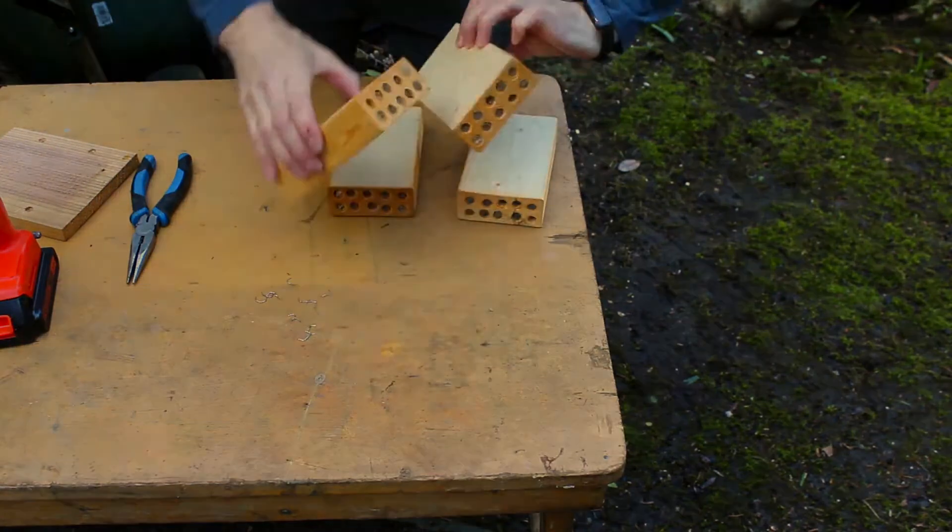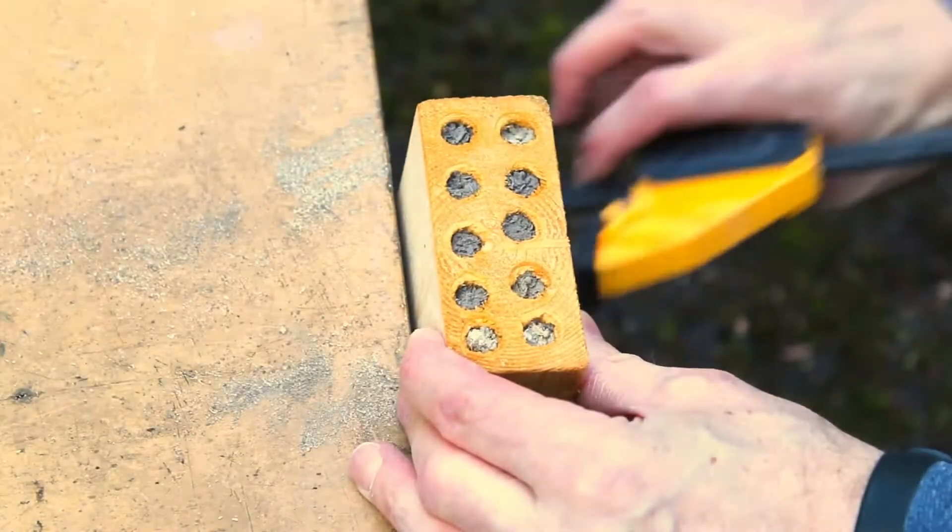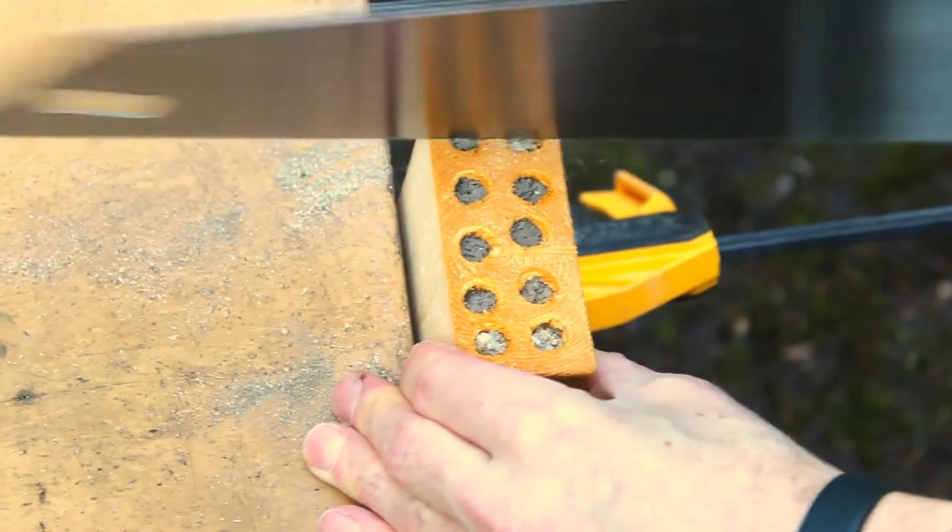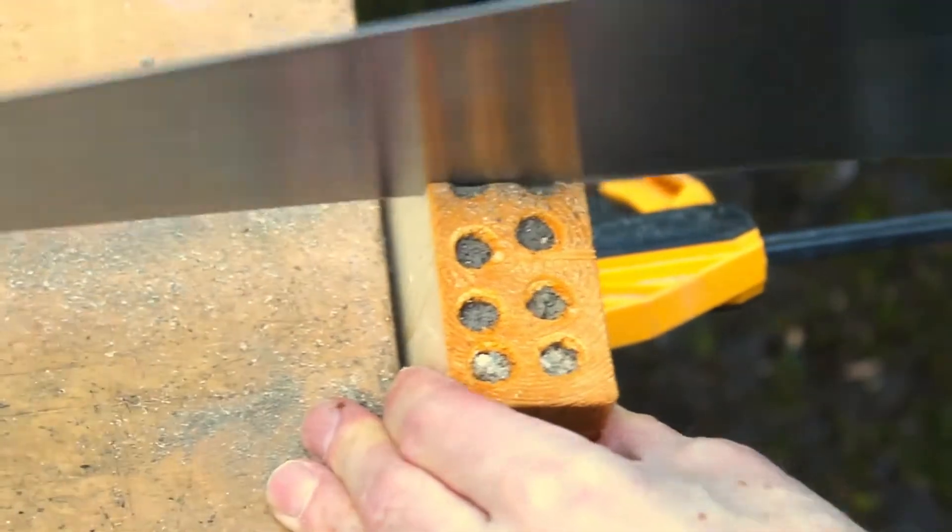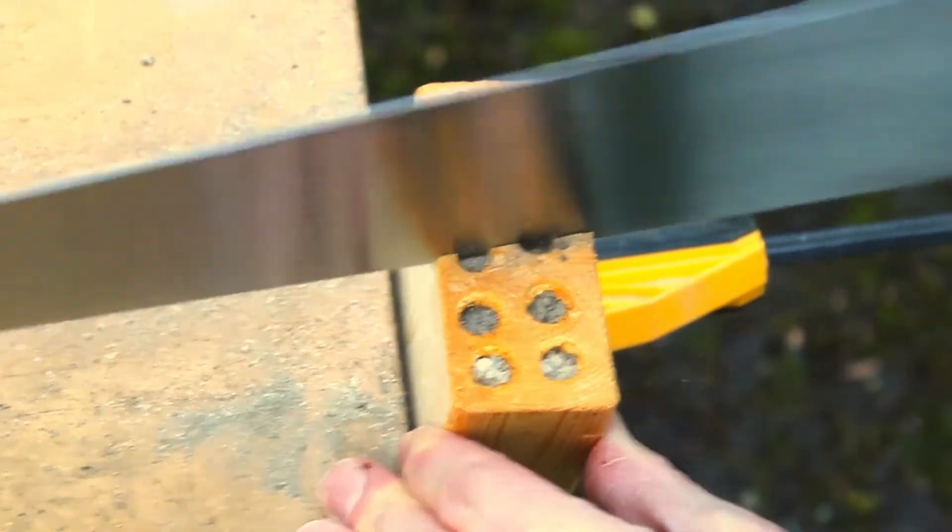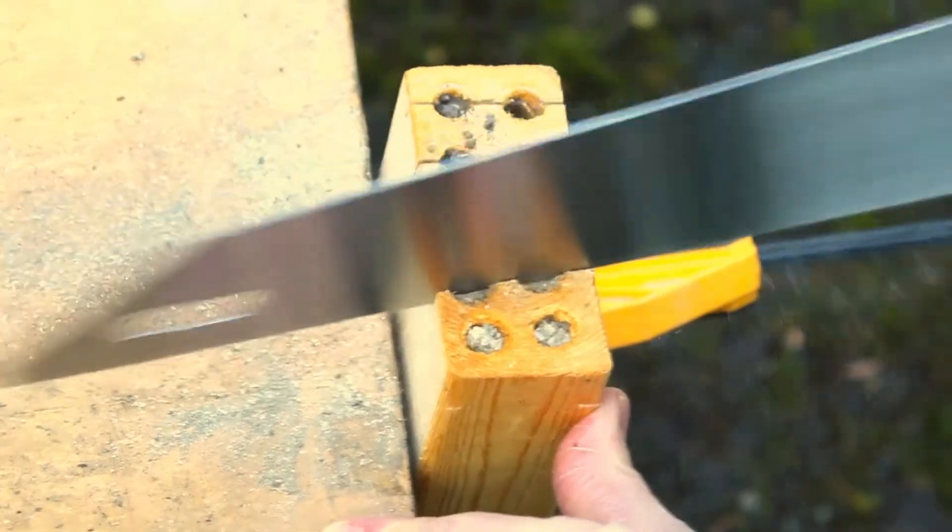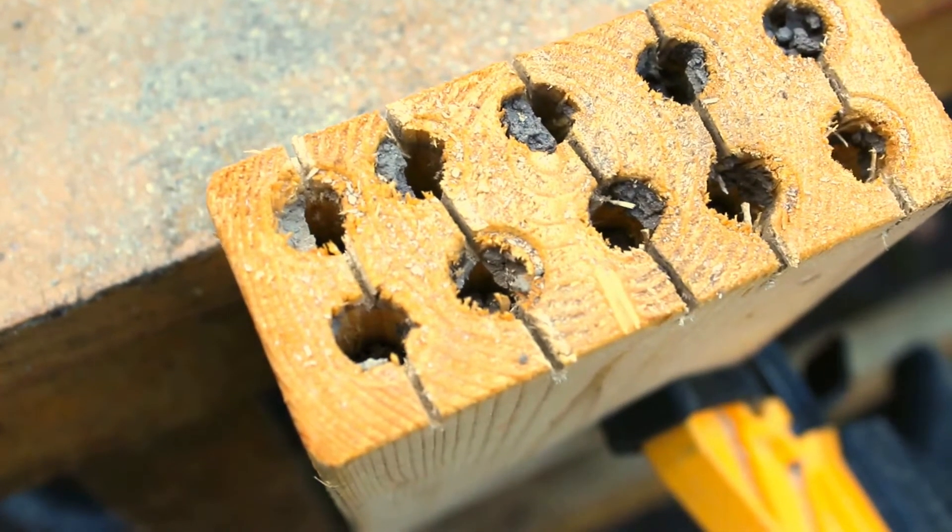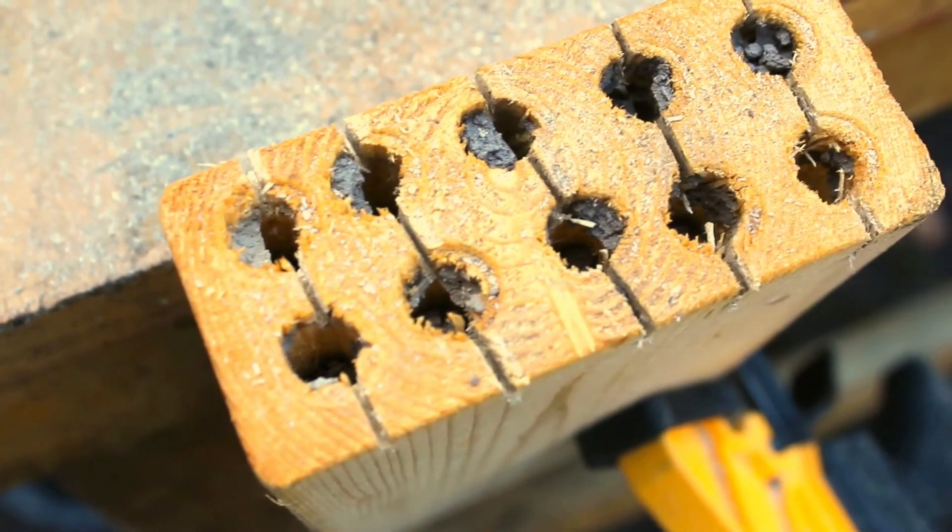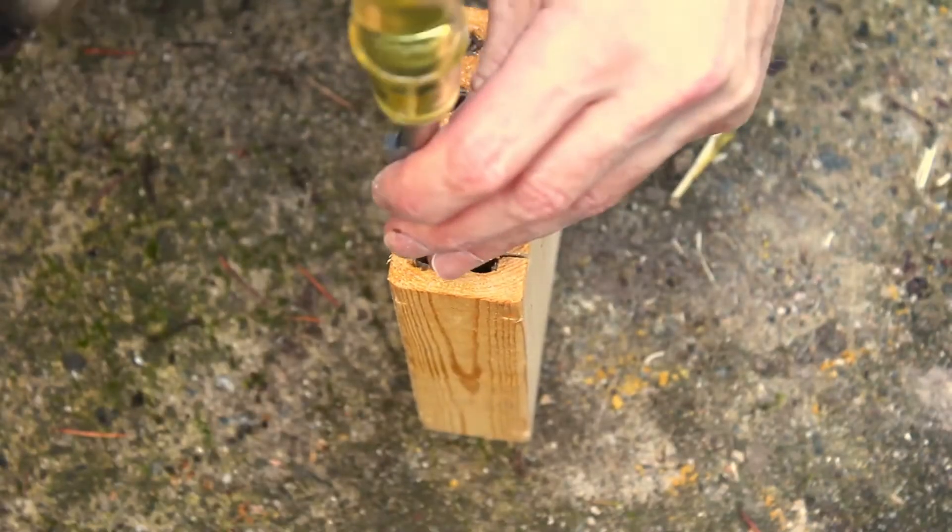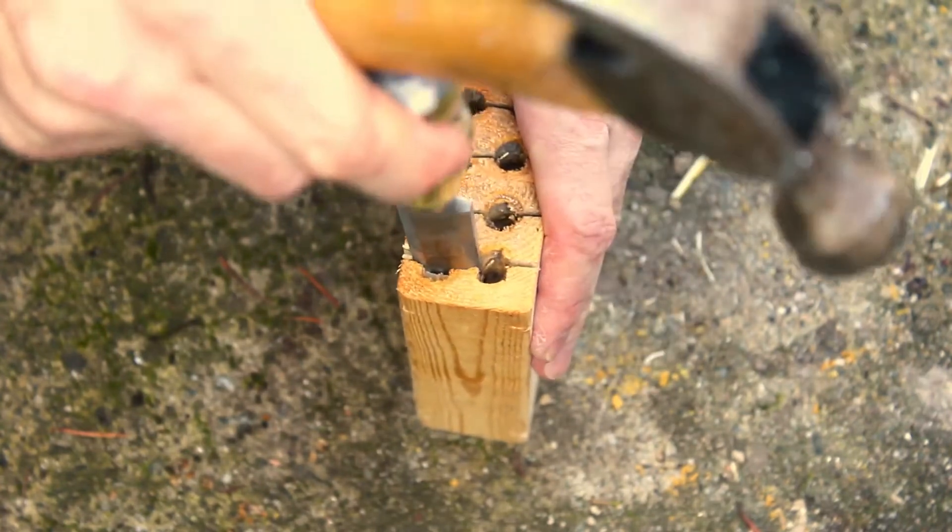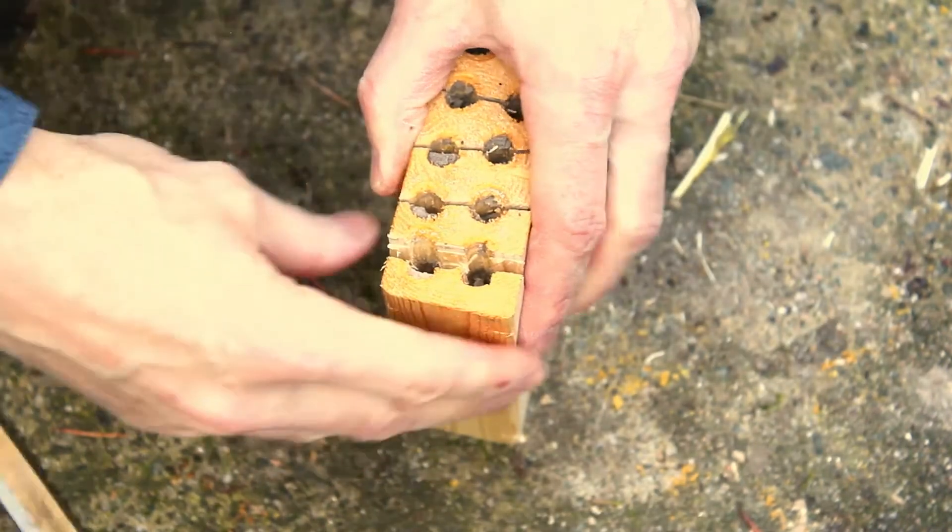Each block will first be attached to the table. A saw is used to cut a small groove across the entranceways. Mason bees leave a small gap at the end of each tube by building two walls for extra protection. This sawing will not be disturbing any of the cocoons inside. With all the grooves cut, a chisel is used to split the wood along the first two nesting holes. This will reveal the cocoons, making it relatively easy to extract them.